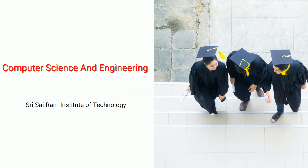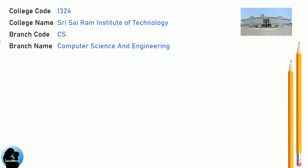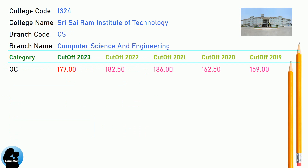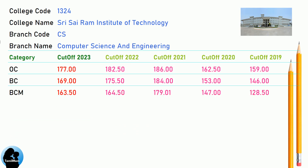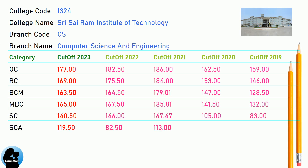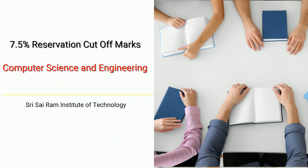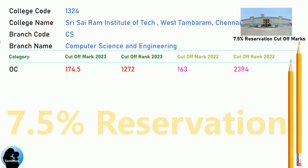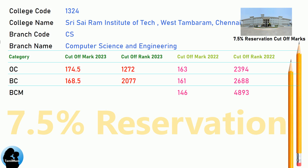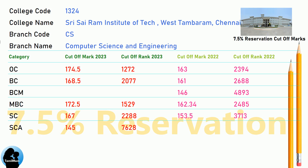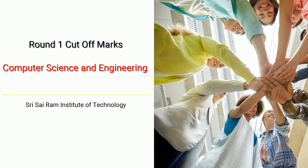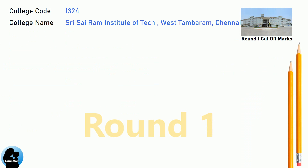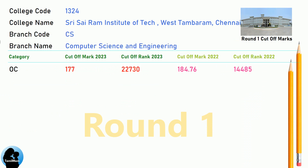DNA Cut-Off for Shri Sai Ram Institute of Technology in Computer Science and Engineering. DNA 7.5 Reservation Cut-Off for Shri Sai Ram Institute of Technology in Computer Science and Engineering. DNA Round 1 Cut-Off for Shri Sai Ram Institute of Technology in Computer Science and Engineering.